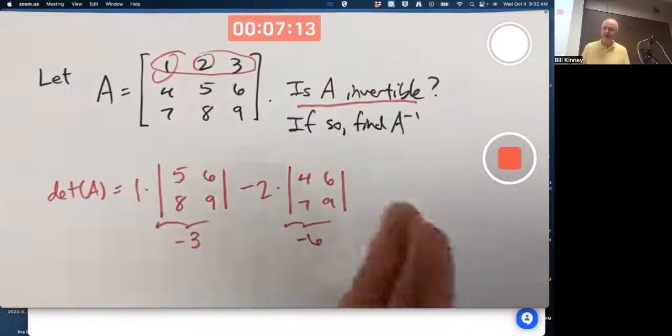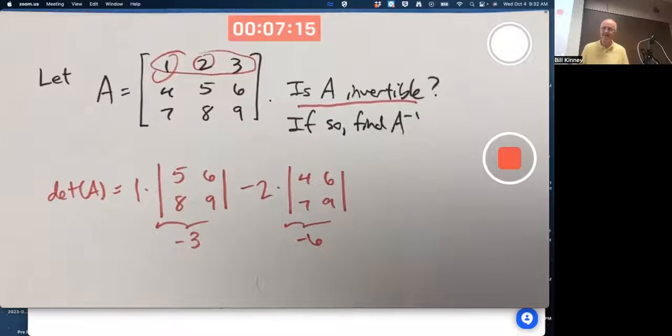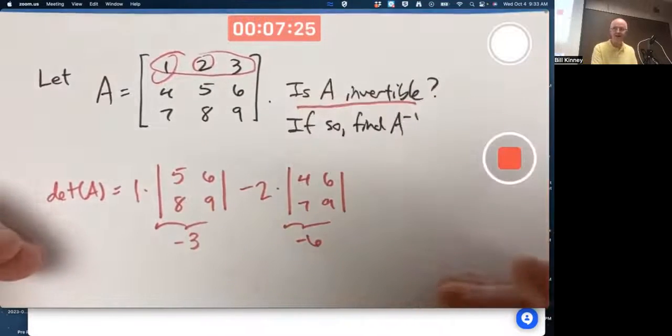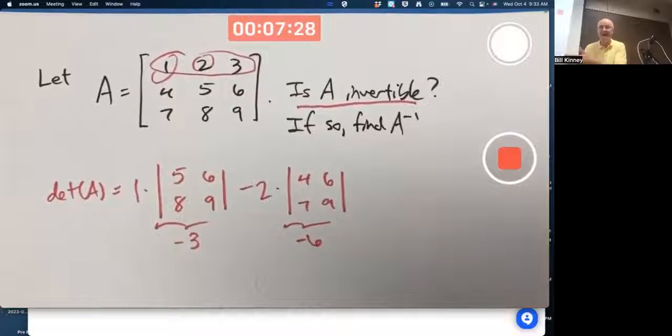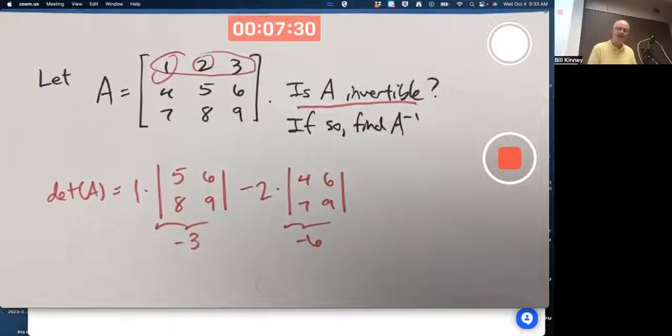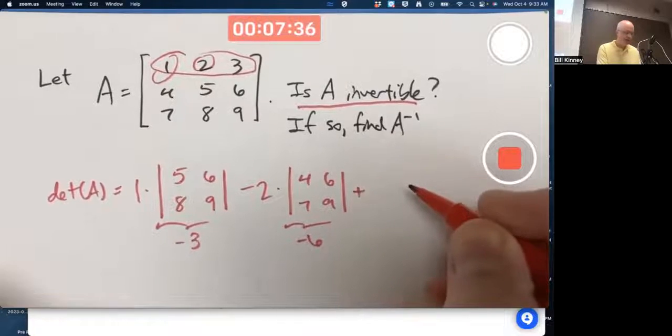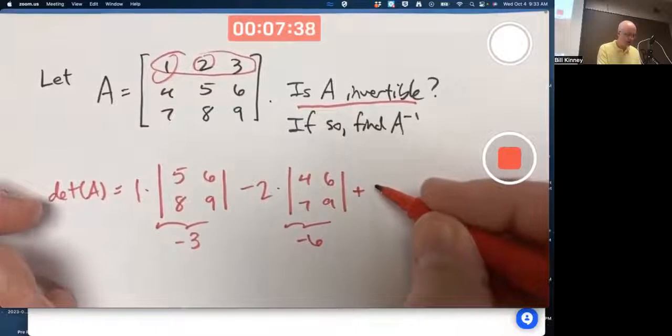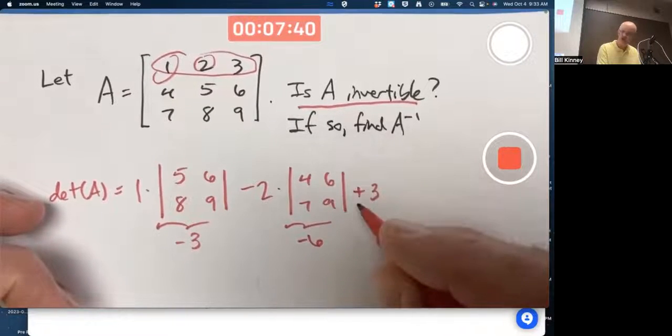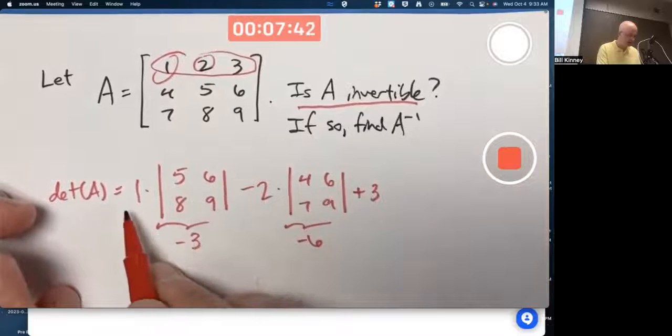That's just the way it works. Who thought of these determinants in the first place? I think it might have been Laplace in the early 1700s. Anyway, we're just going to do it. That's in the first row and second column. Delete the first row and second column. You're left with a two-by-two submatrix, 4, 6, 7, 9. Multiply by the determinant of that submatrix.